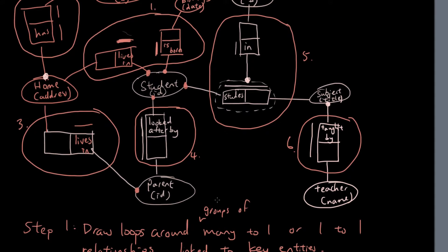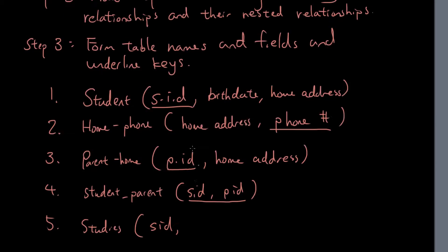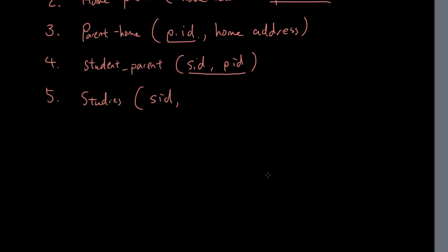And then we have table number five, studies. We got the student ID, we got the subject, and we have the room. And because student ID and subject, the two of them combined together is unique, so I put an underline through both of these to say that they can both together combine together, act as the key.